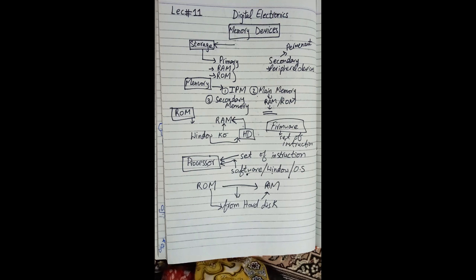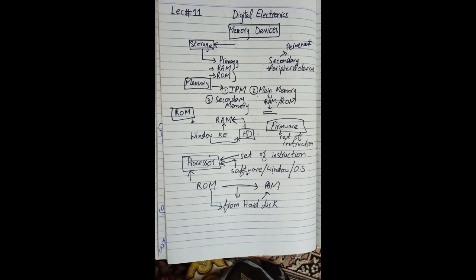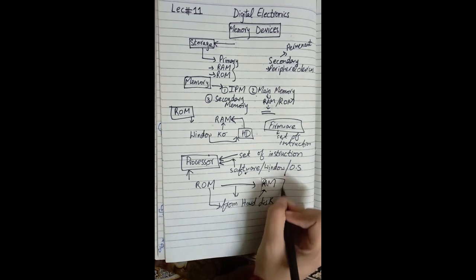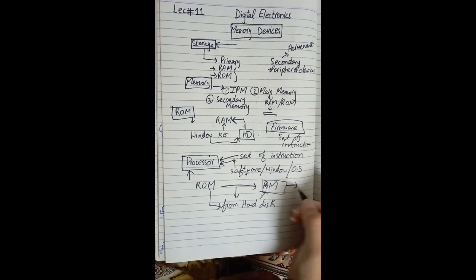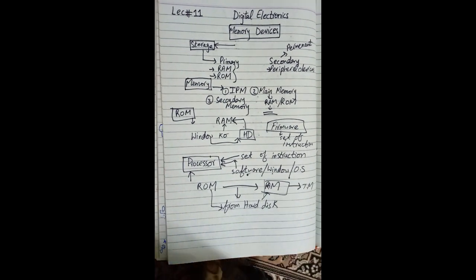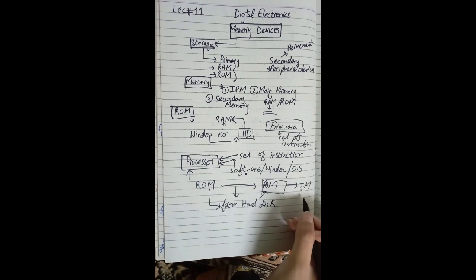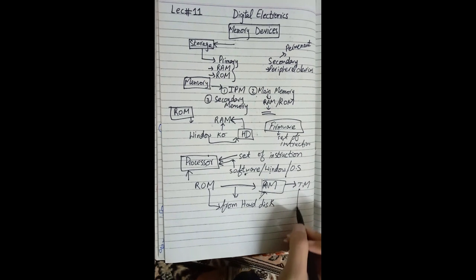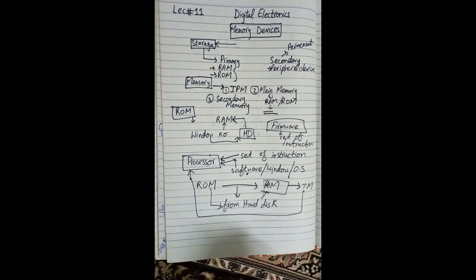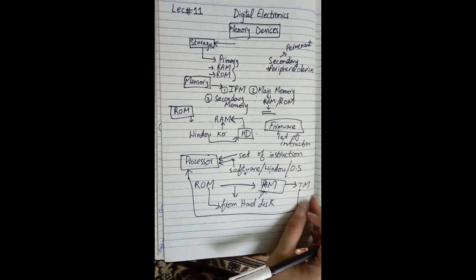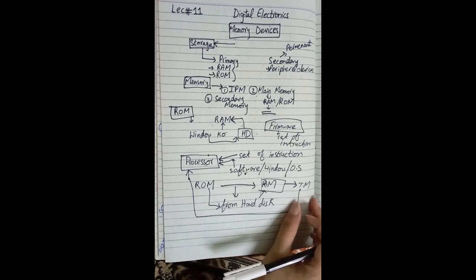To increase the performance of the processor, we have a fast memory — RAM — used in communication. RAM is temporary memory, and what it does is give or take data to or from the processor. This is the relation: temporary memory gives or takes data from or to the processor.